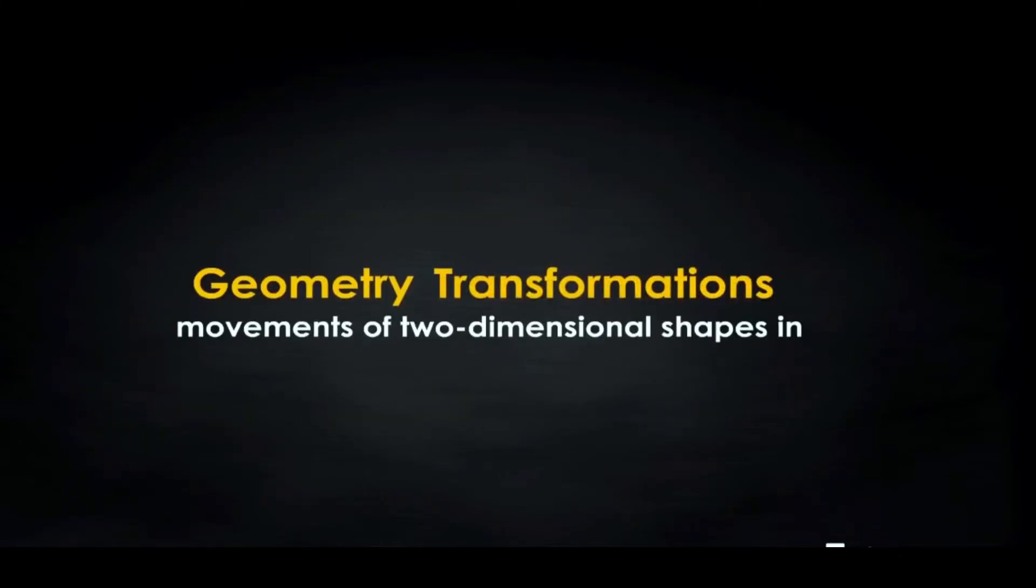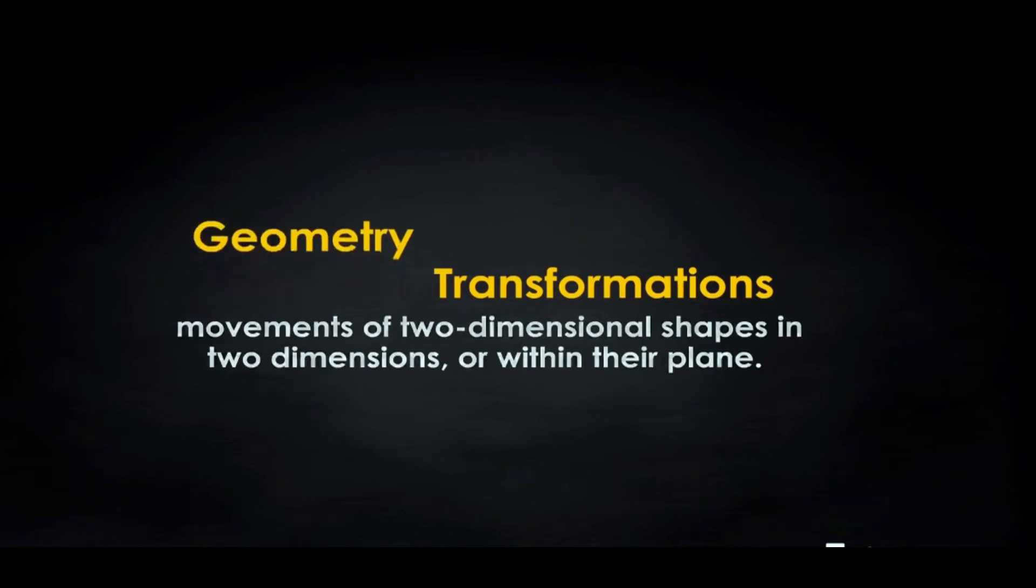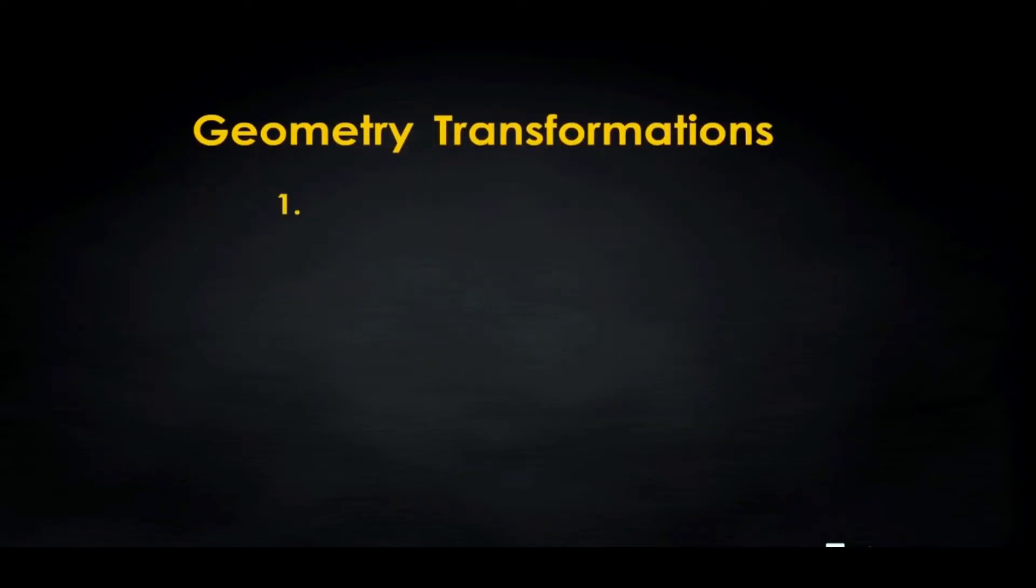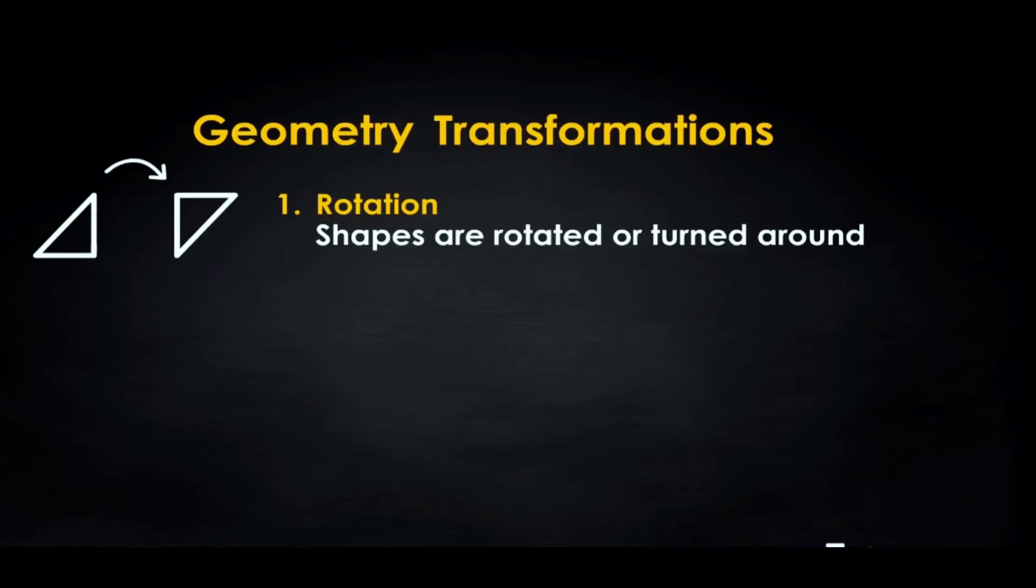Geometry transformations are movements of two-dimensional shapes in two dimensions or within their plane, like restricted game pieces on a game board. You can move two-dimensional shapes in only three ways: 1. Rotation. Shapes are rotated or turned around an axis.